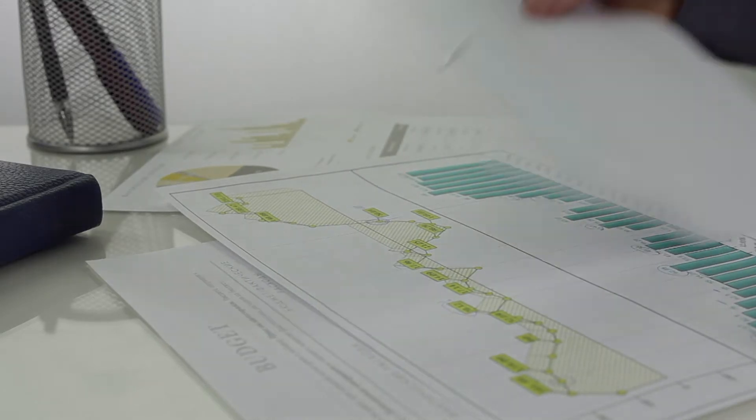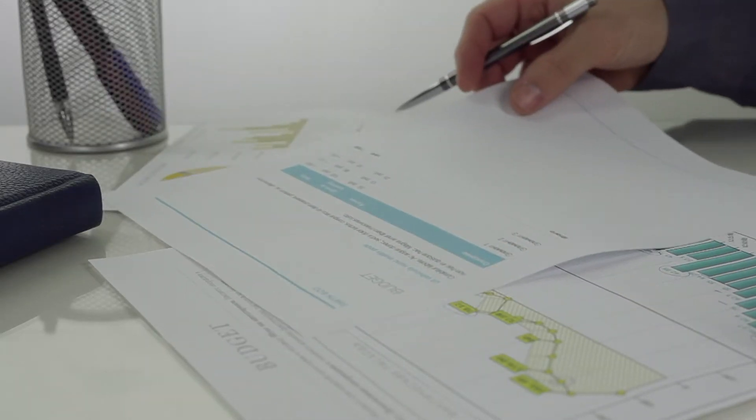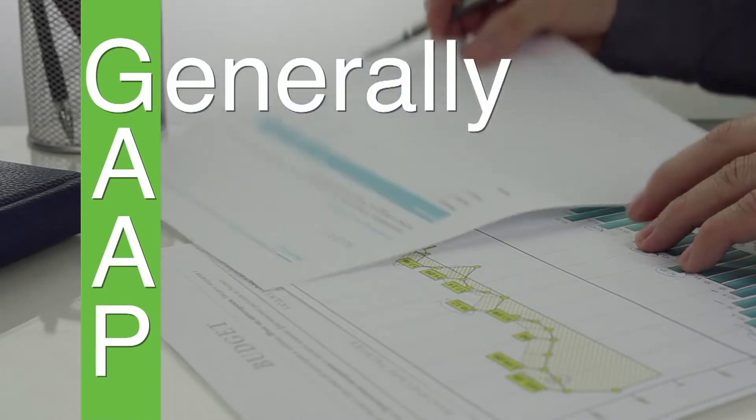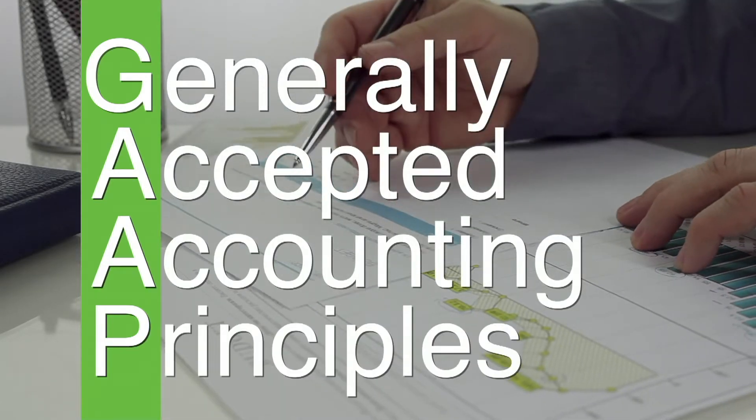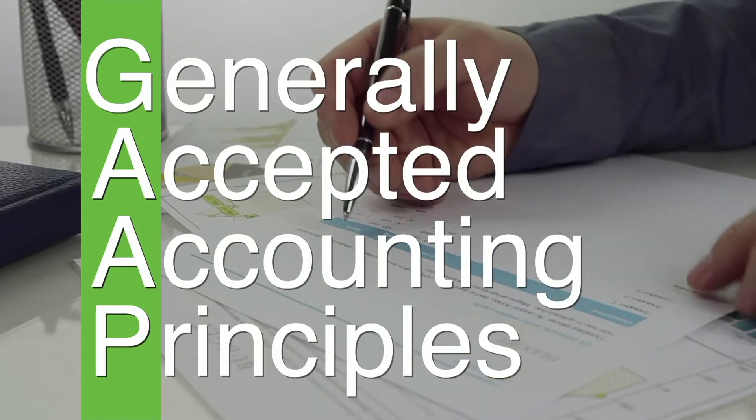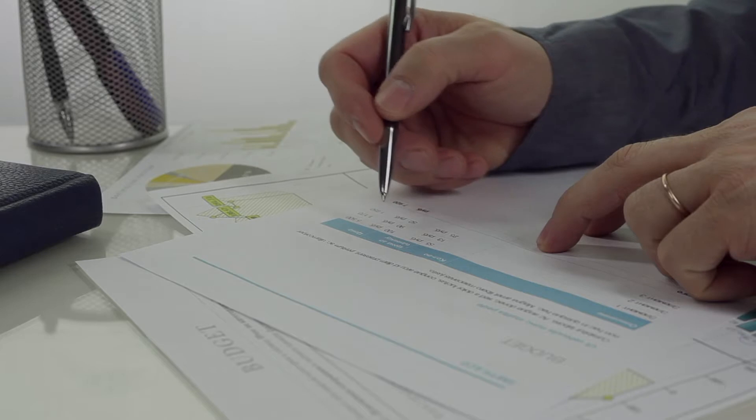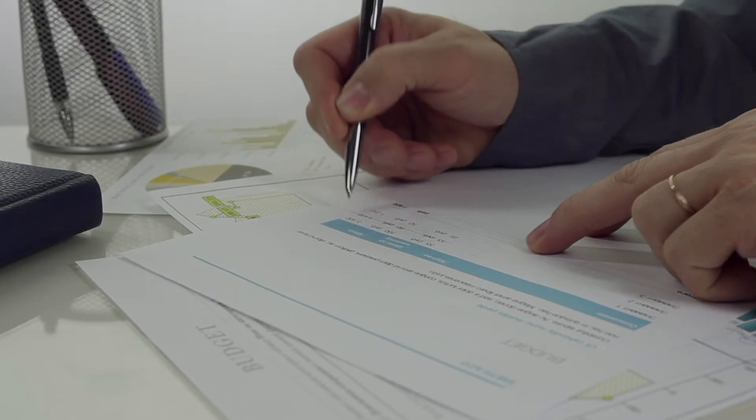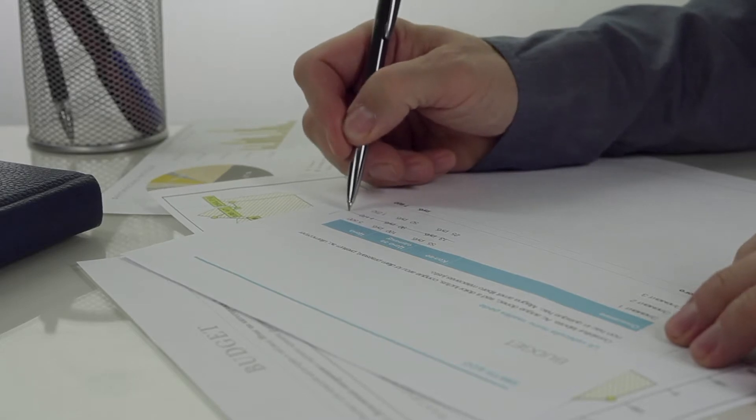Accounting uses specific terms and follows a certain set of rules. The set of rules, standards, and practices used in the accounting industry is called GAAP, or Generally Accepted Accounting Principles. GAAP are used to prepare and standardize financial data such as profit and loss statements and balance sheets. Banks and investors expect companies to follow GAAP when they report their financial information.